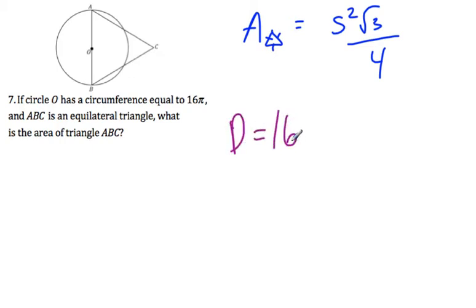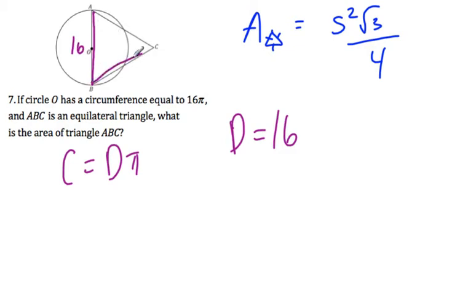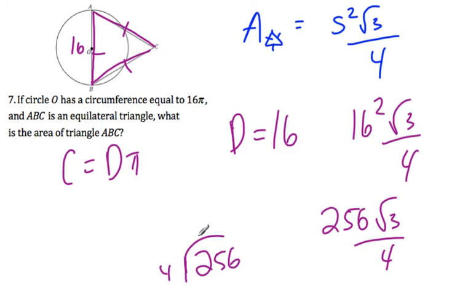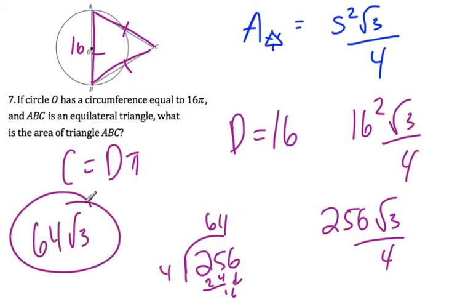If the circumference equals 16 pi, we know the diameter equals 16, since circumference equals diameter times pi. That diameter of 16 is just the side of the equilateral triangle. So the area is 16 squared times radical 3 over 4, which is 256 radical 3 over 4. Dividing 256 by 4 gives us 64 radical 3.